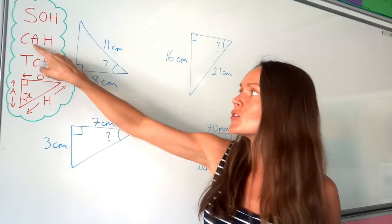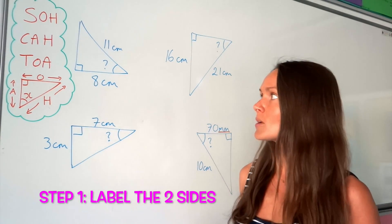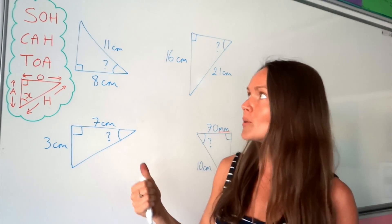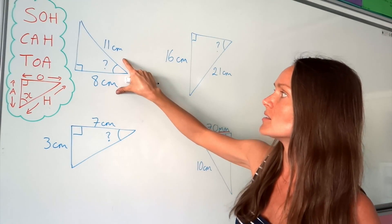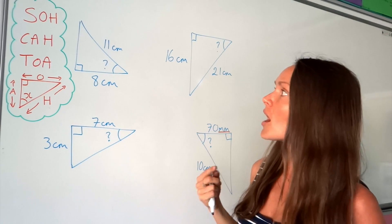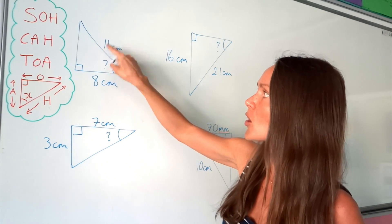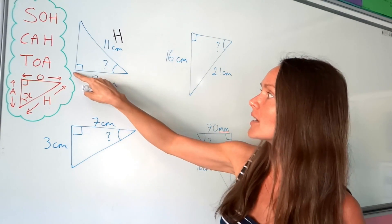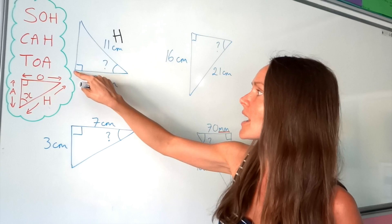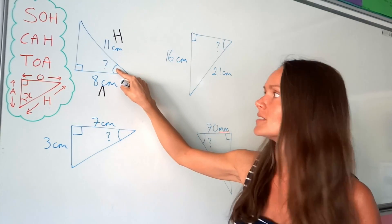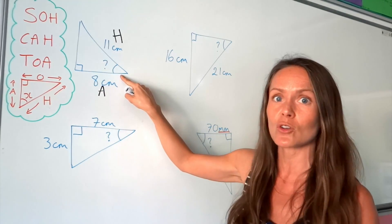When we look at these triangles, the first thing we need to do is label the sides given in the question with opposite, hypotenuse, or adjacent. The hypotenuse is always the longest side and always found opposite the right angle. Adjacent means 'against' — it has to touch the angle you're trying to find.